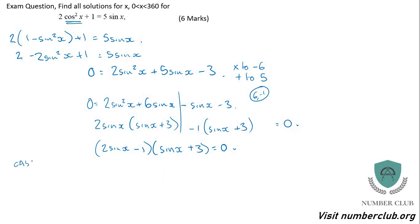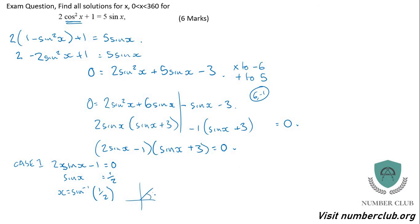Case 1: 2 sine of x minus 1 equals 0, which means sine of x equals 1 half, which means x equals inverse sine of 1 half. Inverse sine of 1 half is 30 degrees. Casting — the other position where sine is also positive gives 180 minus 30, which is 150. So x equals 30 and x equals 150 degrees.